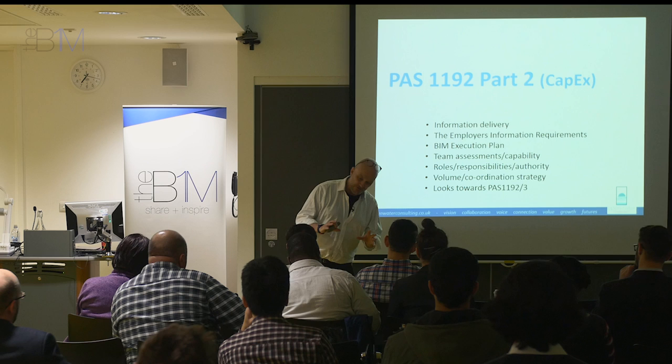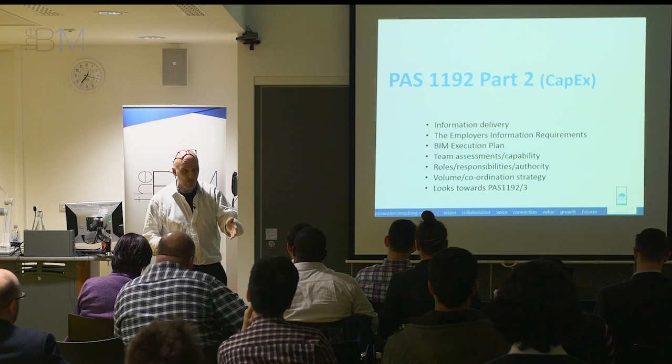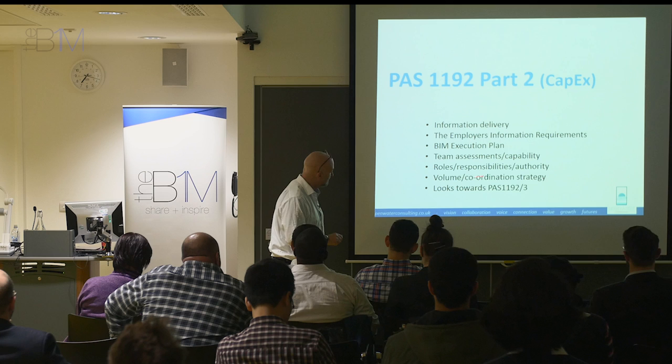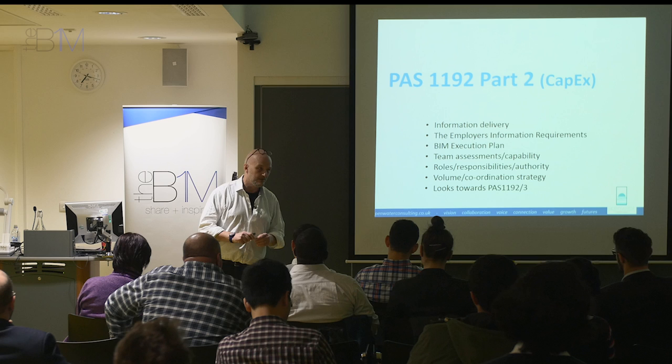Part of this is roles and responsibilities. We're probably all familiar with sorts of matrices which set out who is doing what, when they've got to do it, what they're responsible for, what they're producing — all these sorts of things. And then there's an interesting one here which I think really throws clash detection on its head.